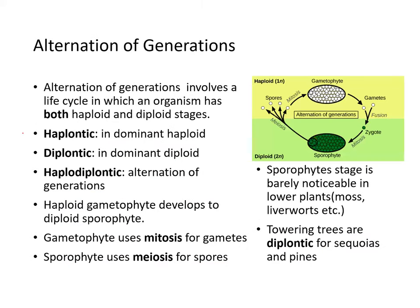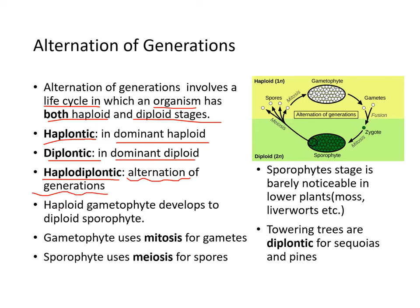Alteration of generation involves a life cycle where an organism has both a haploid and diploid stage. If the dominant stage is haploid, we call that haplontic. If dominant diploid, we call that diplontic. Haplodiplontic are the plants with alteration of generations. The haploid gametophyte develops into a diploid sporophyte. The gametophyte uses mitosis to produce gametes, whereas the sporophyte uses meiosis to produce spores.